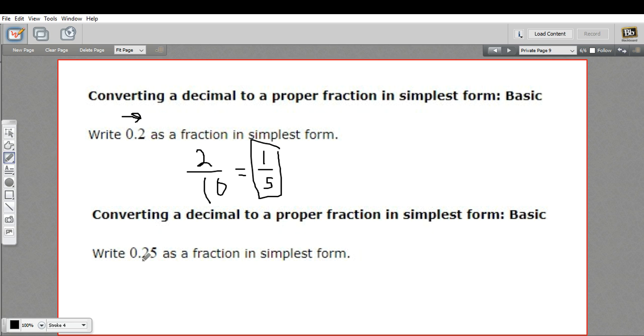Let's try another one. Here we have point two five. So to make my fraction, I'm going to count the place of the last number here. So this is tenths, hundredths. So hundredths is what I'm doing here. A hundred goes on the denominator of my fraction. And then this twenty-five goes on the top. So I have twenty-five hundredths.